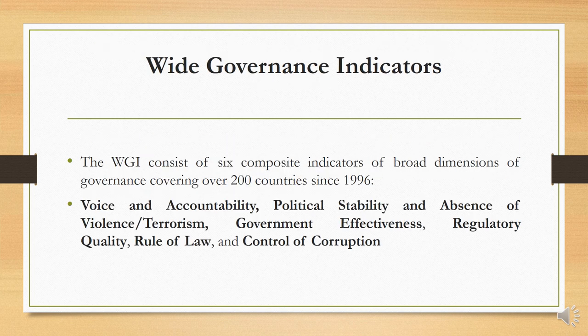The third category is the Worldwide Governance Indicator (WGI). The WGI consists of six composite indicators of broad dimensions of governance, covering over 200 countries since 1996. These are: Voice and Accountability, Political Stability and Absence of Violence or Terrorism, Government Effectiveness, Regulatory Quality, Rule of Law, and Control of Corruption.